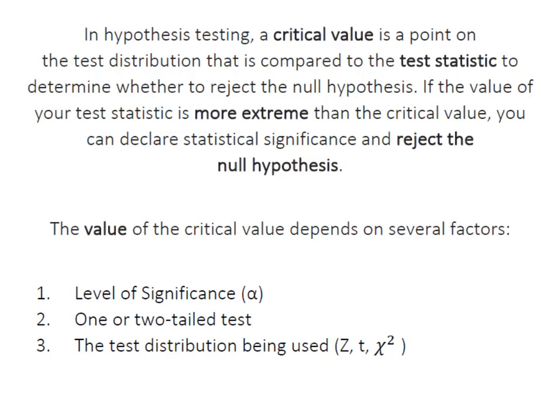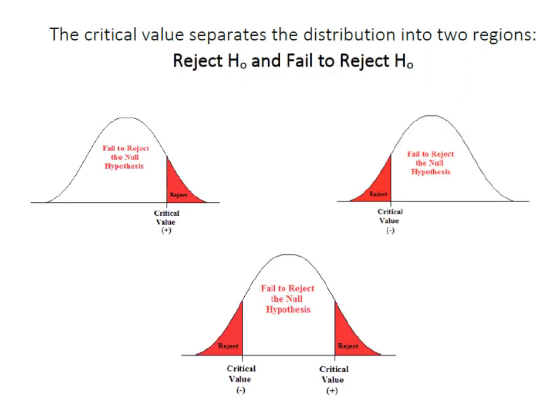The value of your critical value depends on several factors. First, your level of significance or alpha. Next is whether you're running a one or a two-tailed test. And then finally is your test distribution. In other words, are you using a z distribution, a t distribution, or possibly a chi-square distribution.